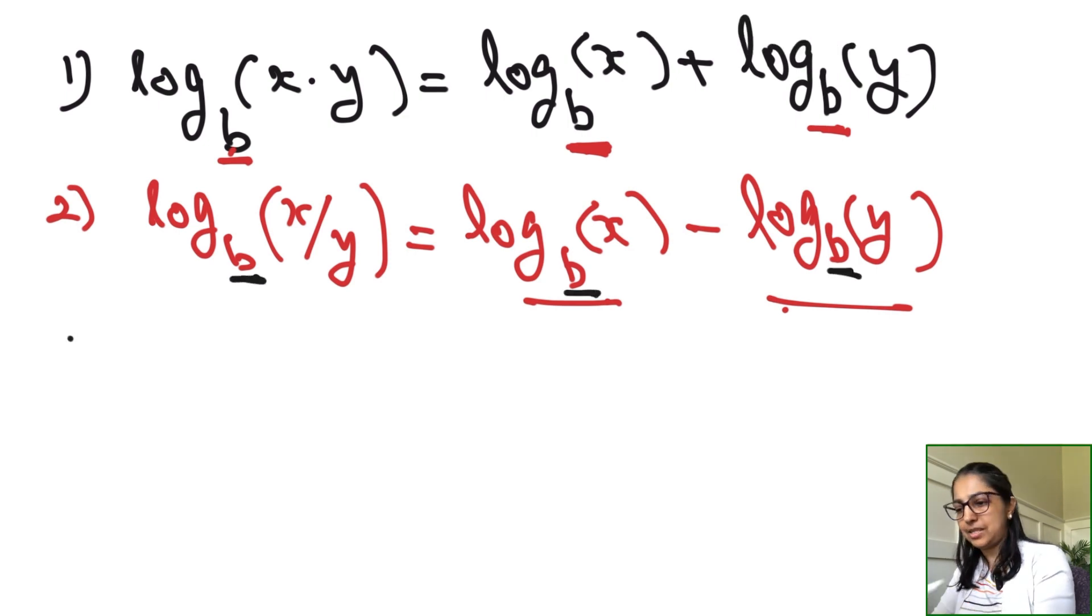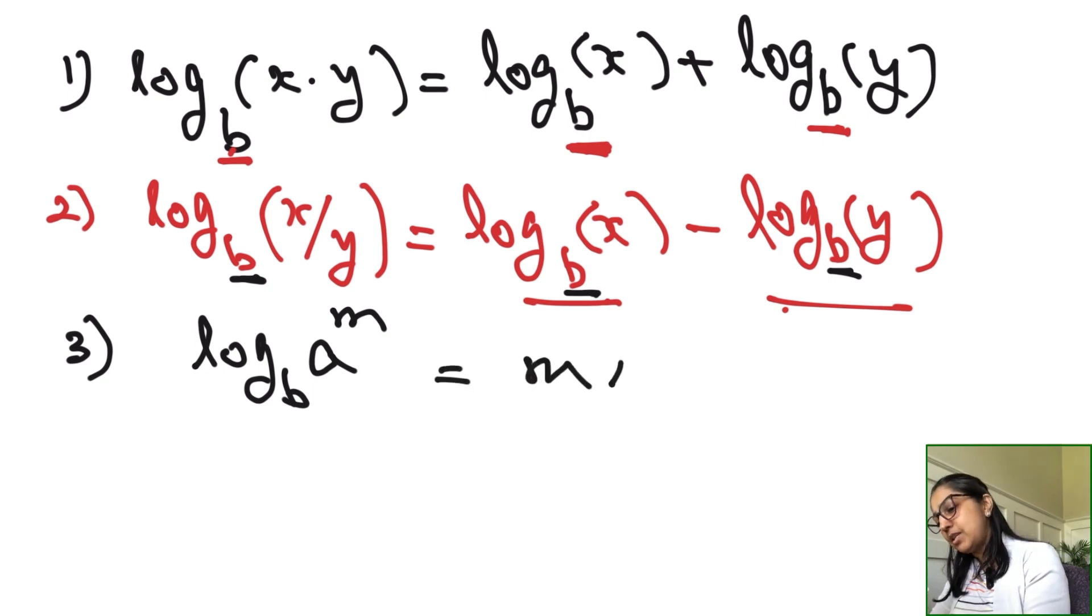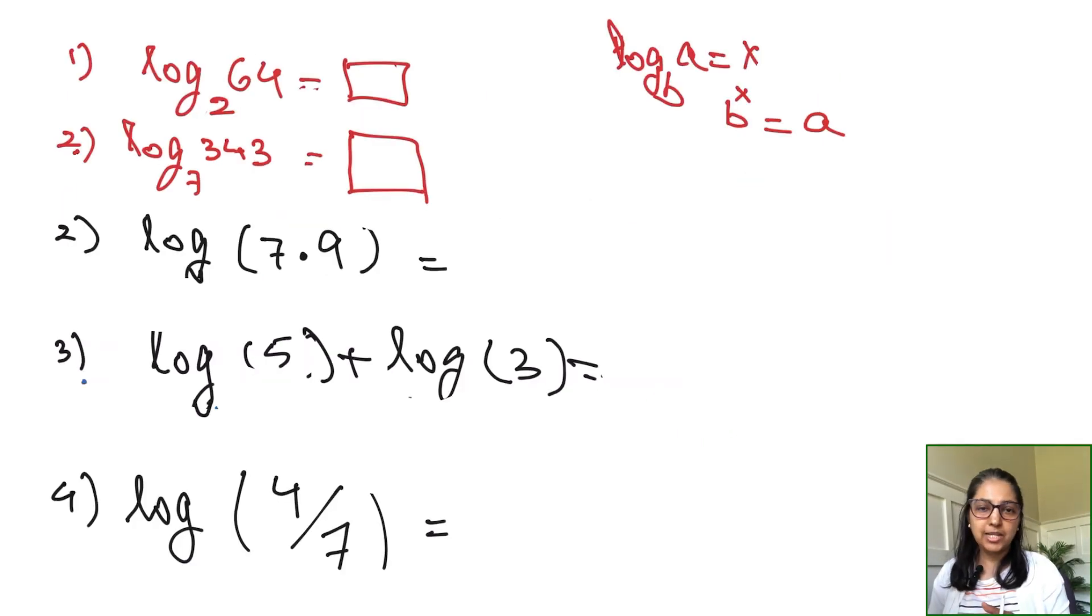Identity number three is the power rule. If you're finding the logarithm to a number which has an exponent, that gets written as m times log_b(a), where m is the exponent. And that's it.